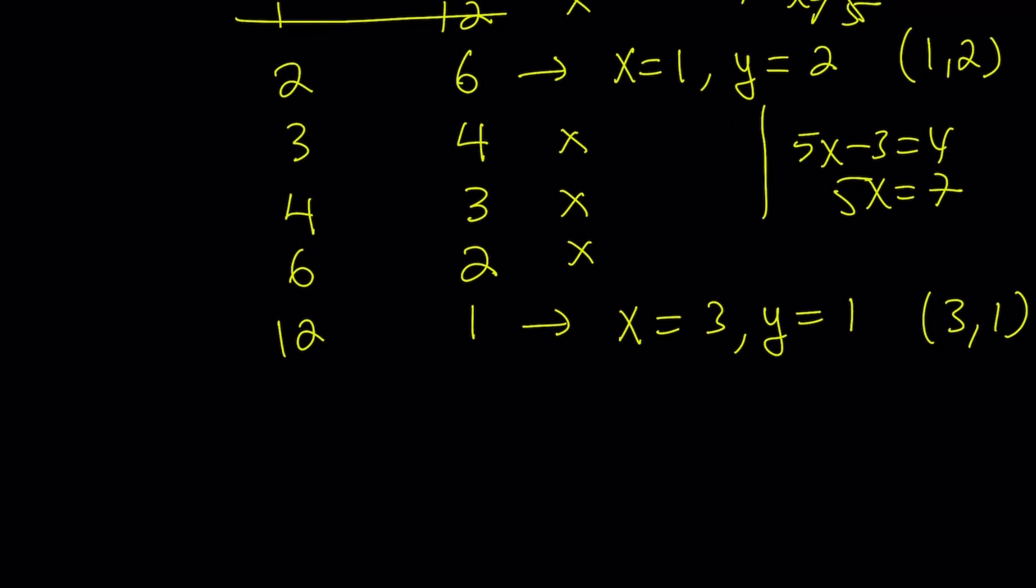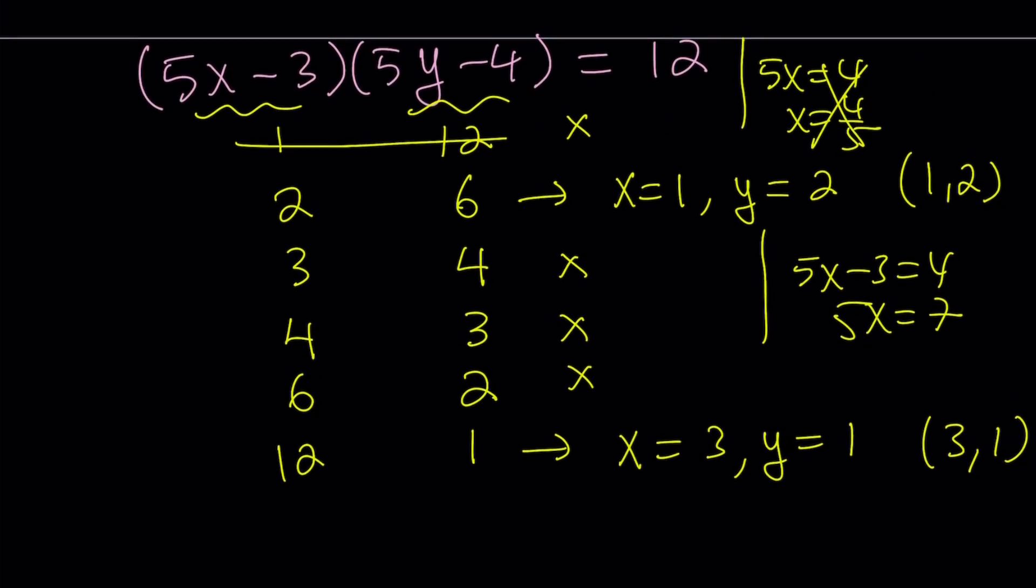Now, those are the solutions that come from positives. Let's go ahead and test out the negatives. What happens if I set this equal to negative 1 and negative 12? This gives me 5x equals 2. So, we can quickly do this by testing the x. And if x gives us something nice, hopefully y is going to give us something nice too. It doesn't give me anything because 5x equals 2 is no good. How about negative 2 and negative 6? 5x equals 1. That's no good. How about negative 3 and negative 4? 5x equals 0. That means x is 0.